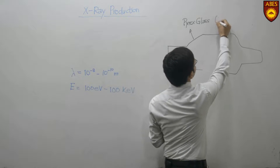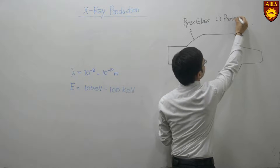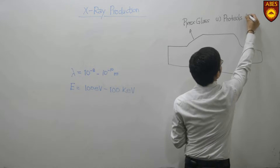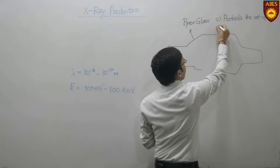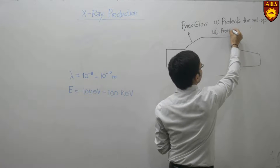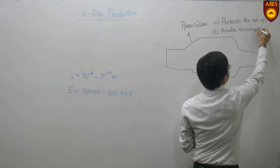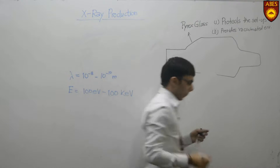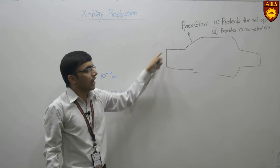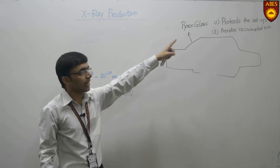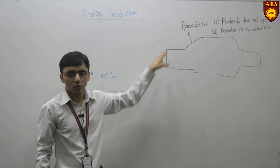The first function is it protects the setup. The second function is it provides a vacuumated environment. So the first component is the glass envelope which is made up of pyrex glass, and it performs two functions: it protects the whole setup and provides a vacuumated environment.